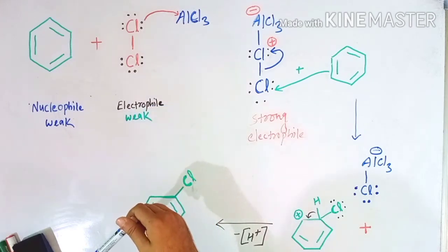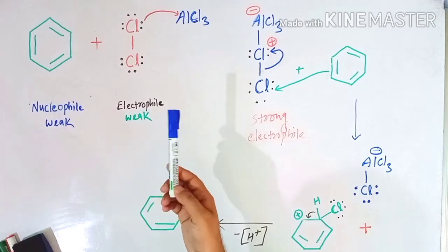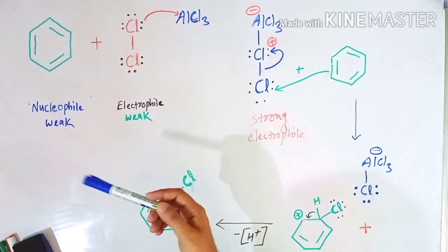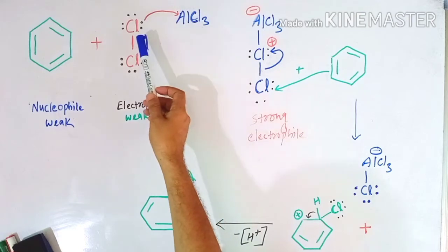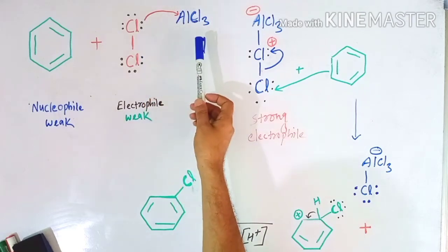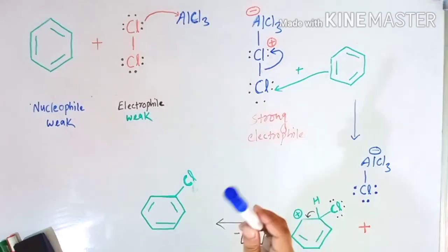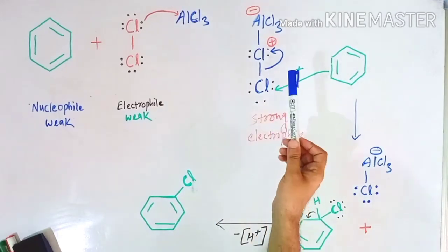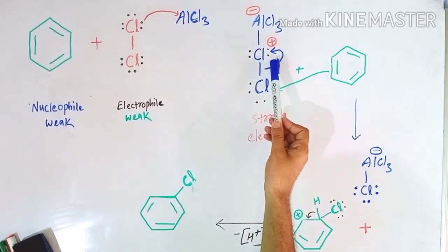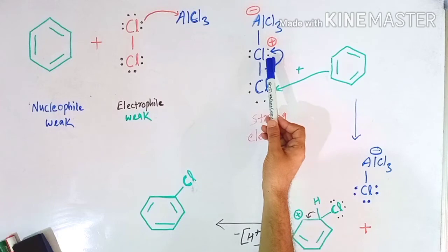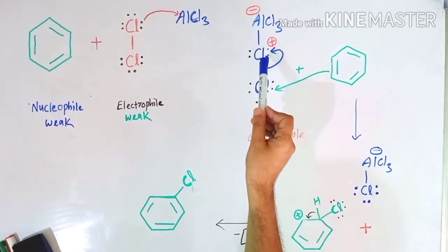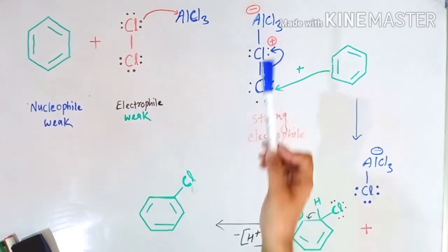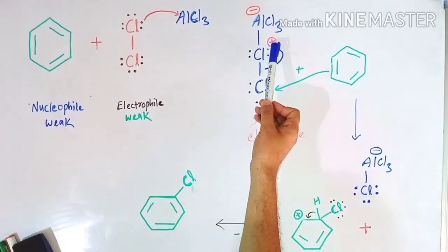Here is the mechanism: AlCl3 accepts a pair of electrons from chlorine. As it accepts the pair of electrons, it acquires a negative charge. And as chlorine loses its pair of electrons to form the bond between aluminum and chloride, it acquires a positive charge.